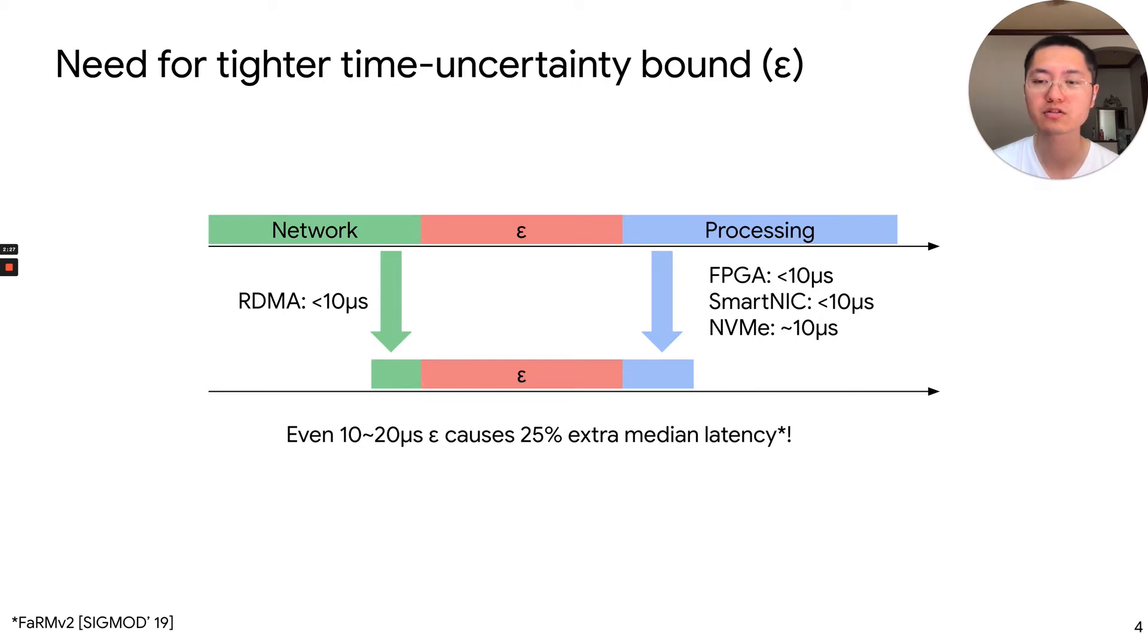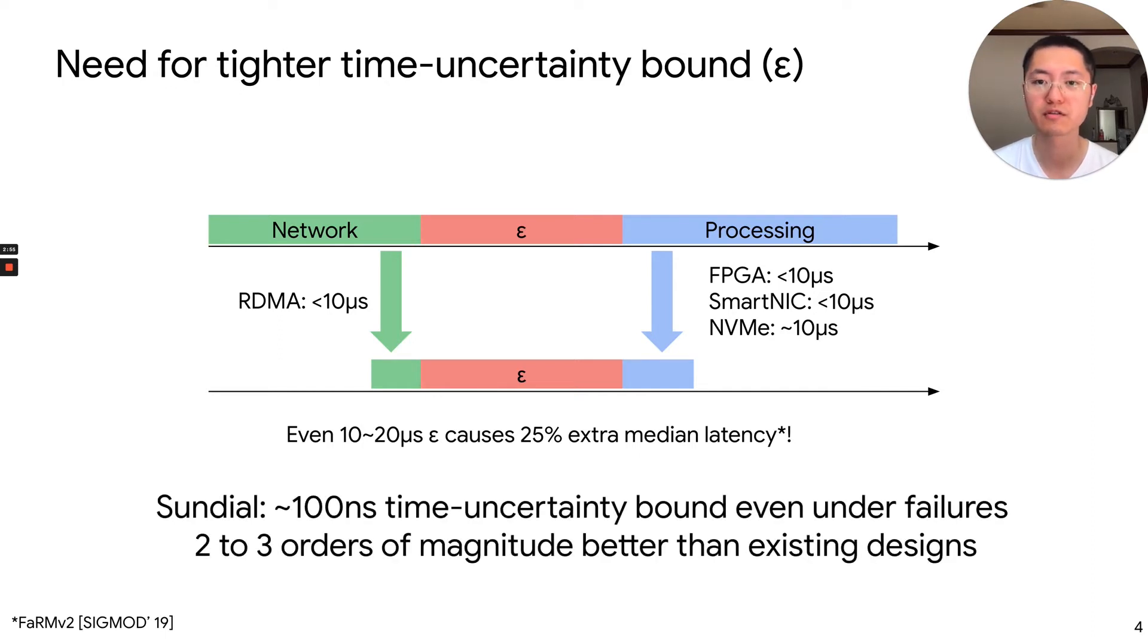We not only need a bound, we also need a very tight bound. This is because with the technology in both the network and on the server, the latency has reduced to microsecond level. So the time uncertainty bound starts to become the bottleneck. A recent study shows that even 10 to 20 microsecond time uncertainty bound still causes 25% extra latency at median. So we designed Sundial to provide 100 nanosecond level time uncertainty bound, even under failures. And this is 2 to 3 orders of magnitude better than existing designs.